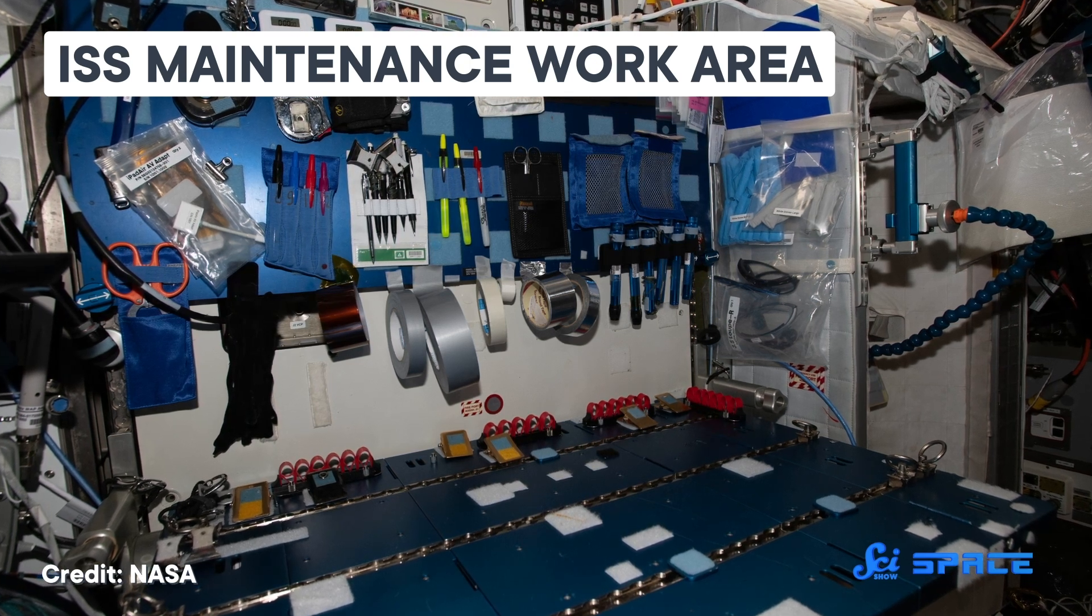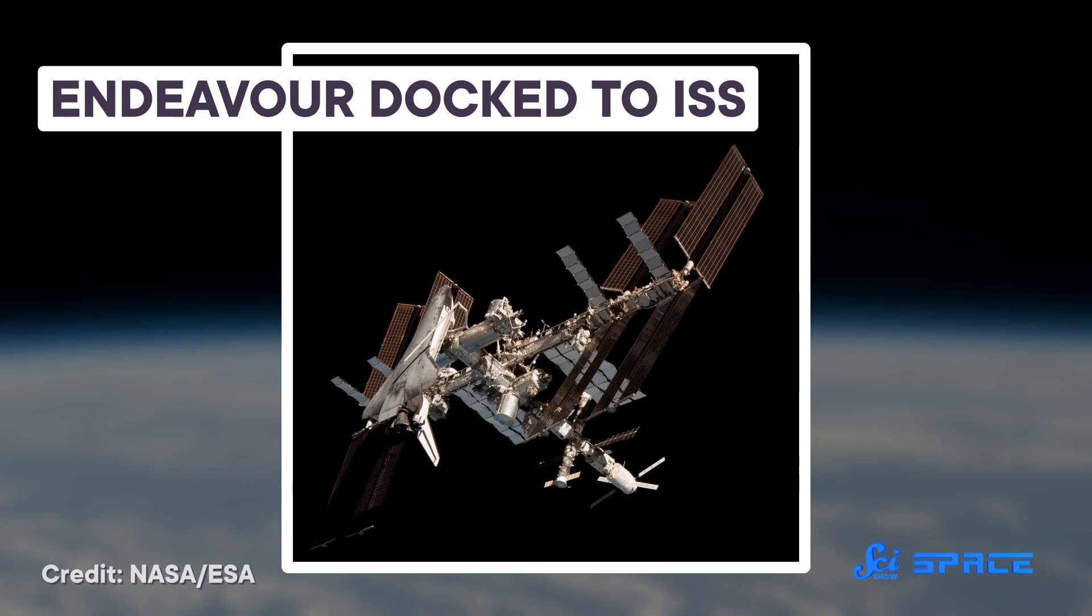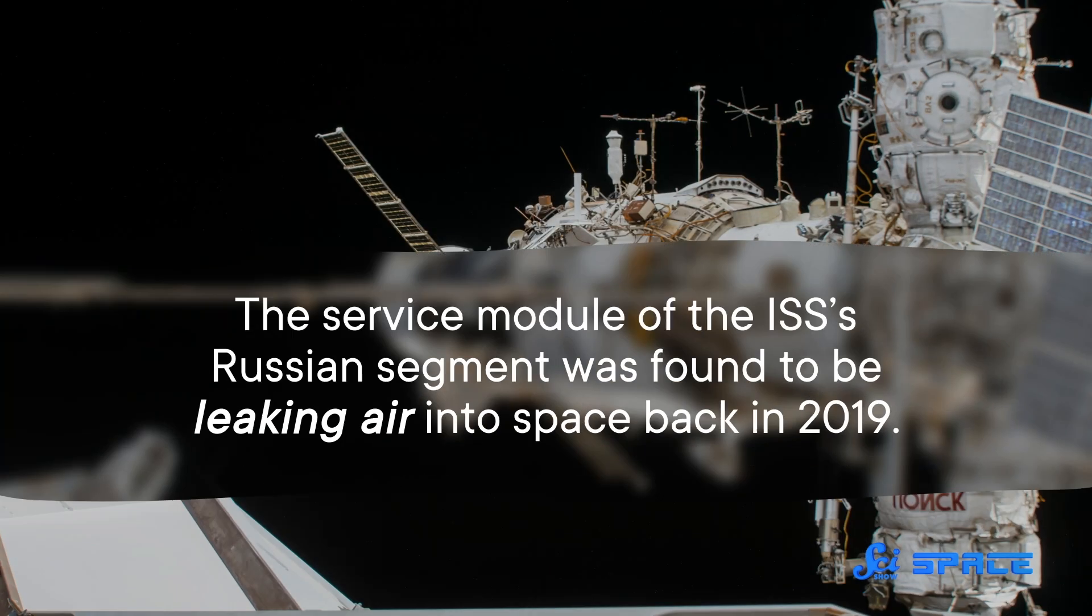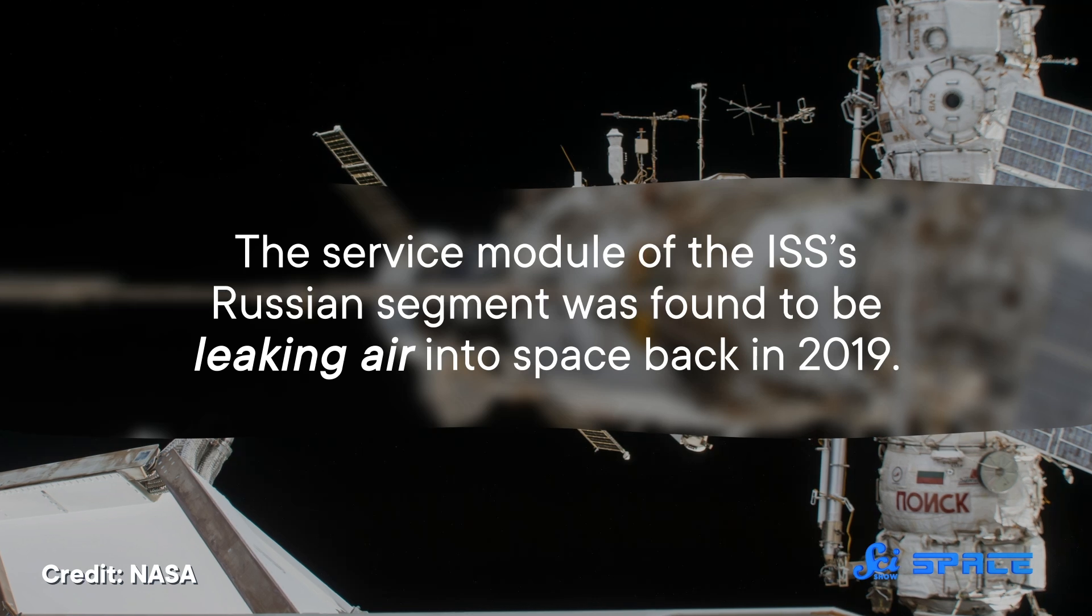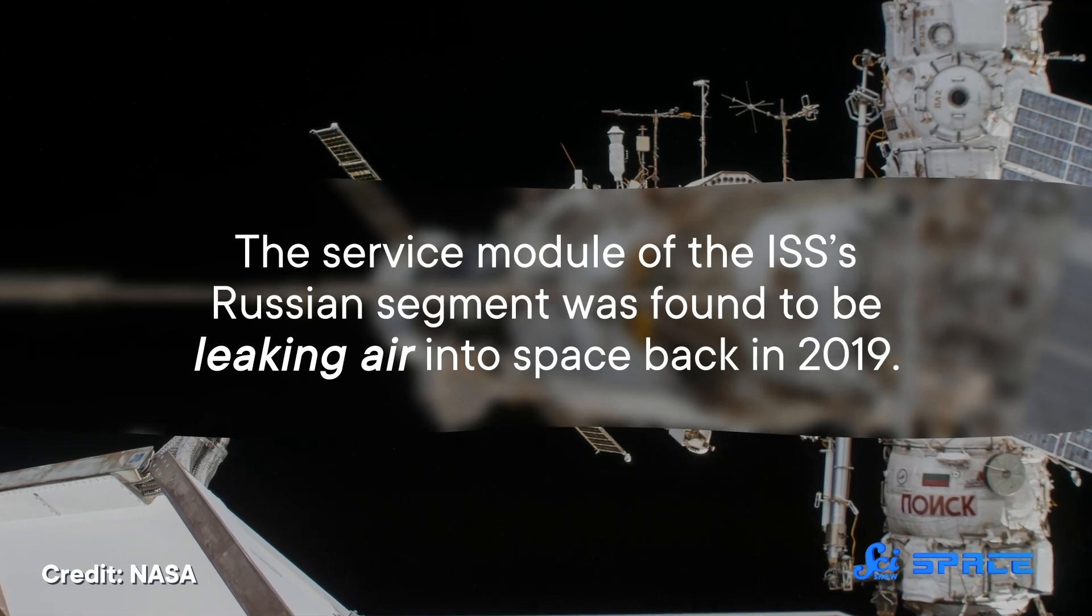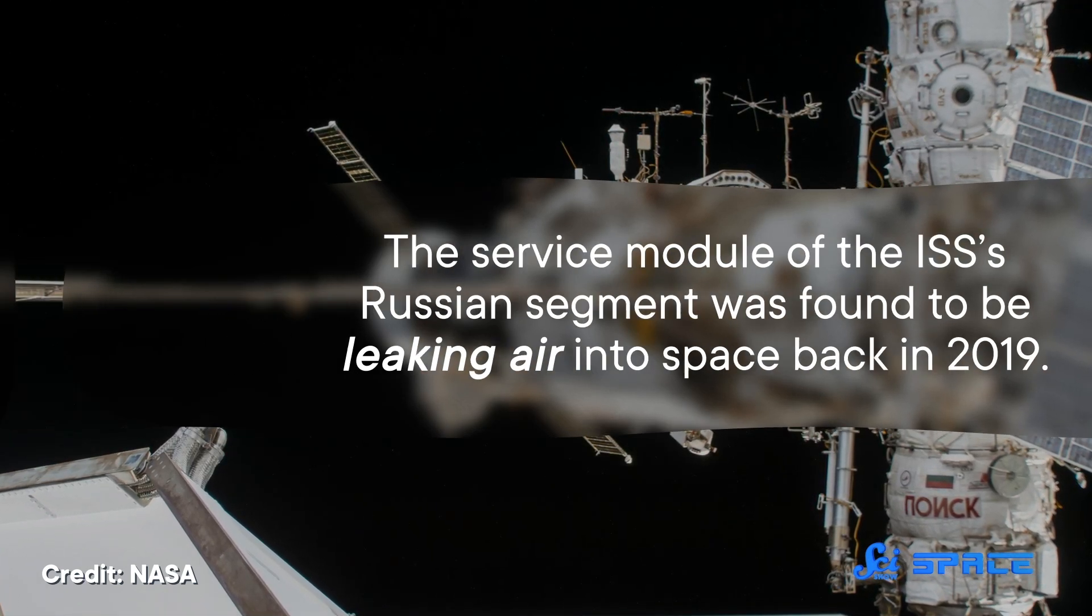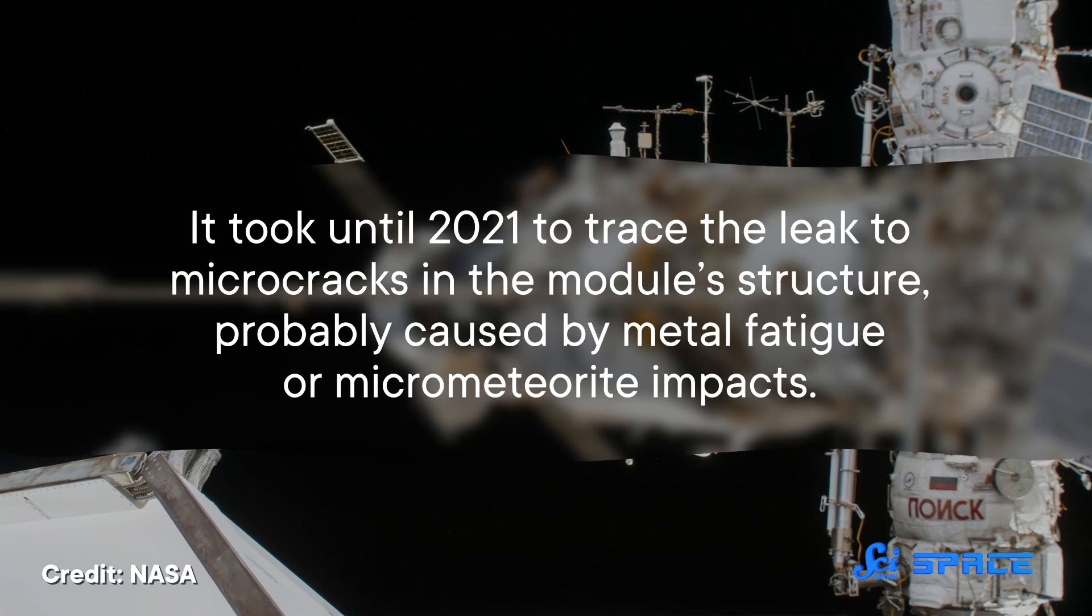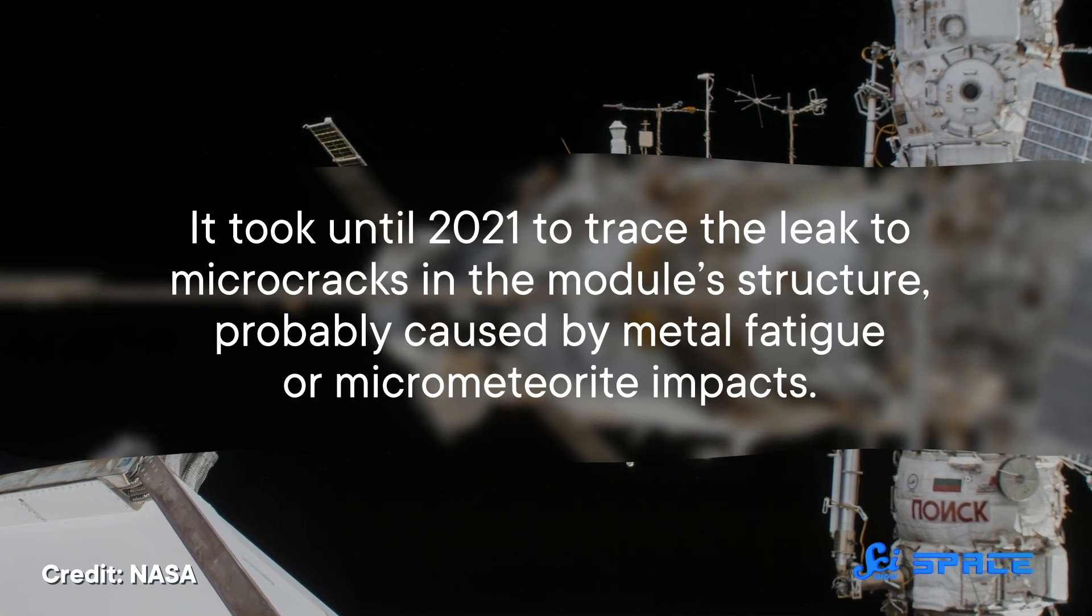Things like its habitable modules, radiators, and trusses. These critical components accrue small amounts of stress every time a spacecraft docks or undocks from the station, and even when it crosses between the day and night sides of the Earth. For instance, the service module of the ISS's Russian segment was found to be leaking air into space back in 2019.